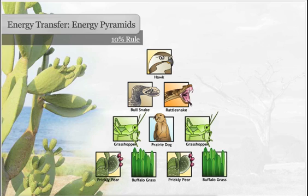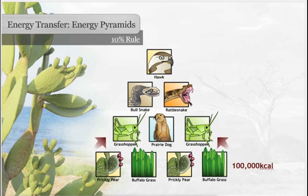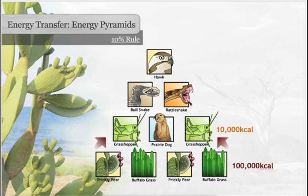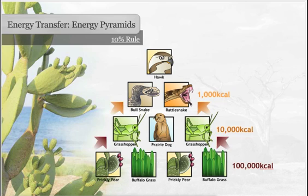As measured by kilocalories or kcal, you can predict how much energy is available at every other level in the energy pyramid using the same technique. For instance, if 100,000 kilocalories are available at trophic level 1, then 10,000 kilocalories are available at level 2. You can calculate the kilocalories at trophic level 3 by dividing the energy at level 2 by 10.